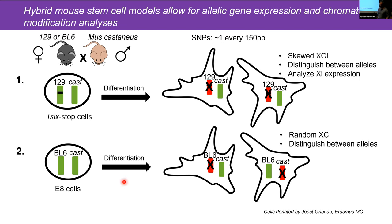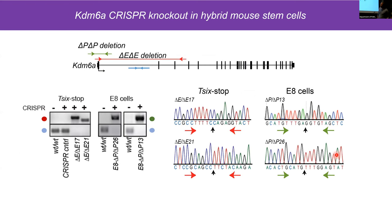The second model used was another hybrid — derived from a cross between black 6 and castaneous mice, without the T6 mutation, so after differentiation you have typical random X inactivation. This model allows us to look at allelic changes via polymorphisms, though not specifically at inactive or active X expression. We took these ES cells and used CRISPR to delete two different locations of KDM6A: a promoter deletion (delta P) — a 5KB deletion covering the promoter into exon 1 — and an exonic deletion (delta E) — a 45KB deletion removing exons 2, 3, and part of 4.